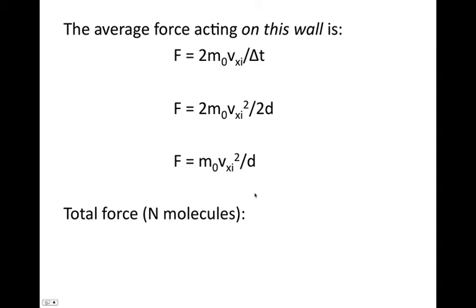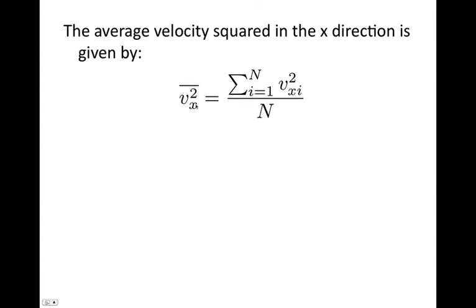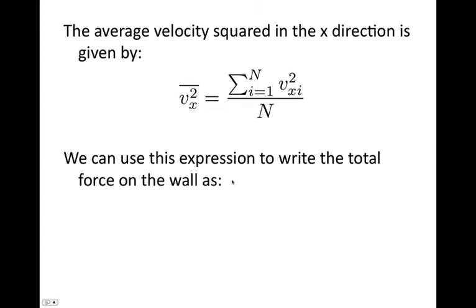That was the force for one molecule, but inside our box we have N molecules, so we need to add up the contribution of each. Since m₀ and d are the same for all molecules, they're a common factor we can pull out front. We then sum the velocity squared in the x direction for each particle. The average velocity squared in the x direction is the sum of all values divided by N. So the total force on the wall is F = (m₀/d) × N × V̄x².